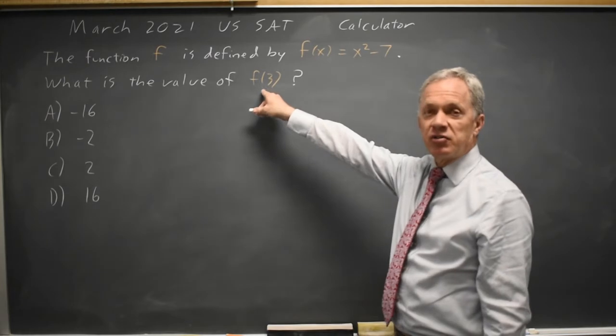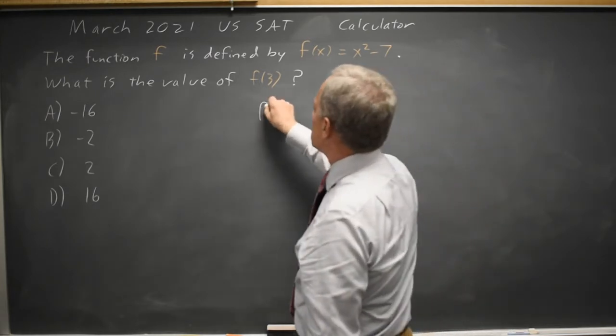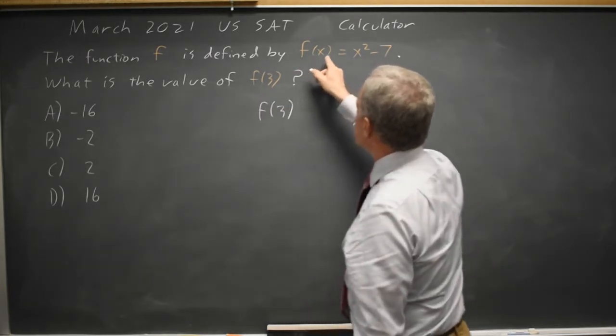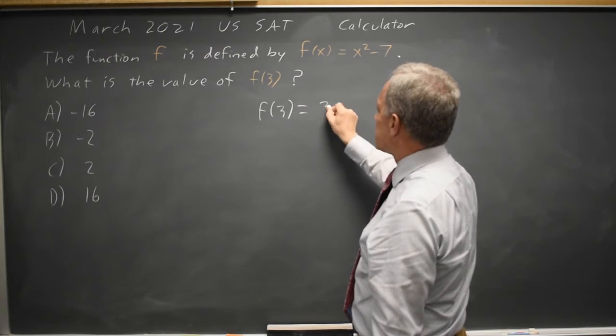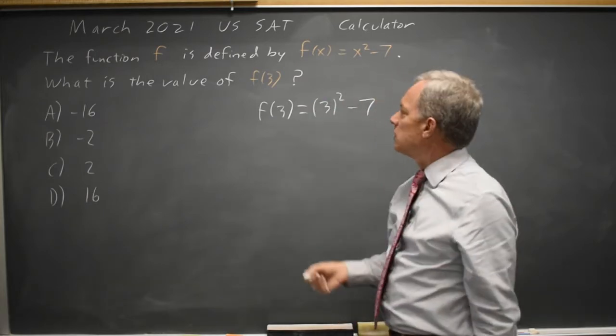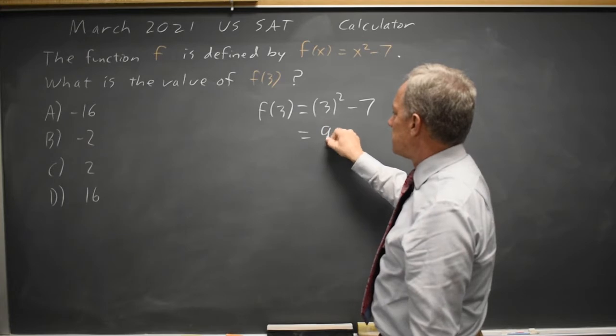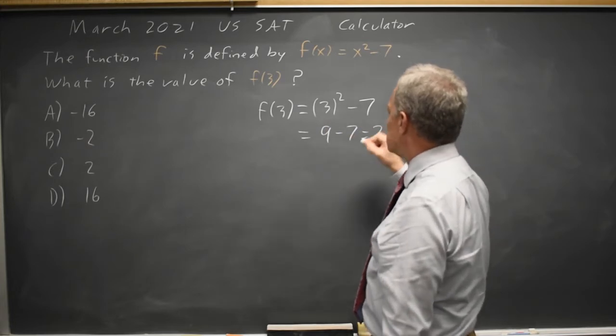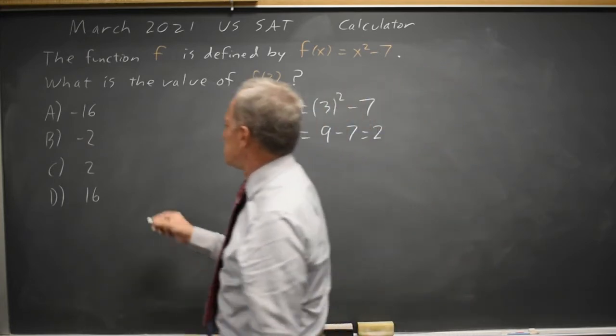So the notation f of 3 means f of x is whatever's in the parentheses. You square that and then you subtract 7. So that is 3 squared is 9 minus 7 equals 2. Choice C.